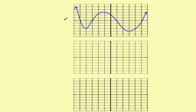Let's quickly run through what the first derivative method looked like again. You had an original graph here — this is y. Then, and I would suggest you line up these three graphs vertically, we put a graph of the first derivative here, and then down here is what we really want: a graph of the second derivative. Let's repeat those steps to show how to get a sketch using first derivative information.